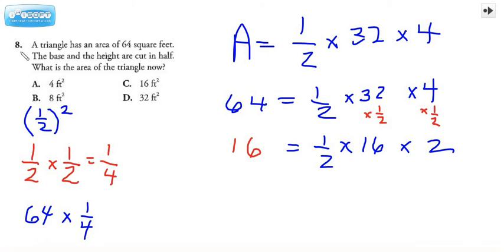Hey everybody, Ms. Dietrich here. We're taking a look at question number eight. A triangle has an area of 64 square feet. The base and the height are cut in half. What is the area of the triangle now?